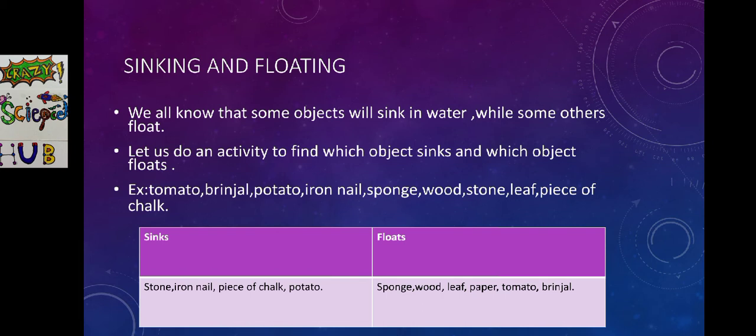Let us do an activity to find which object sinks and which object floats. For this activity, we need some materials such as tomato, brinjal, potato, iron nail, sponge, wood, stone, leaf, piece of chalk. Now let us do this activity. Take a bowl of water and test each and every object which is given here. First, you take tomato and leave it in the water. Observe what happens. Later, brinjal, next potato, next iron nail. And you note down all your observations in the given table form.